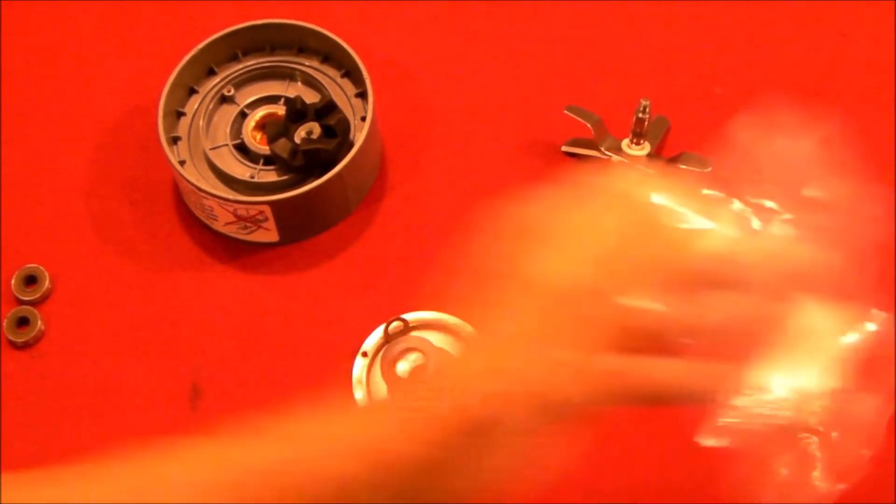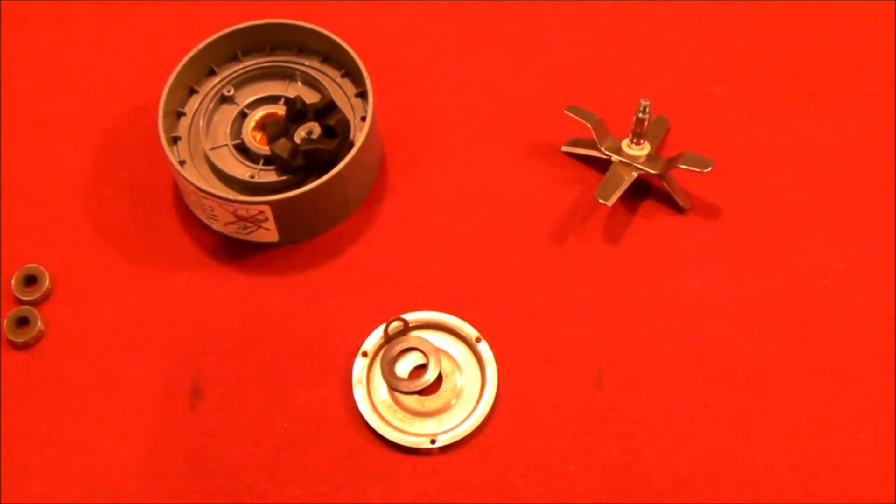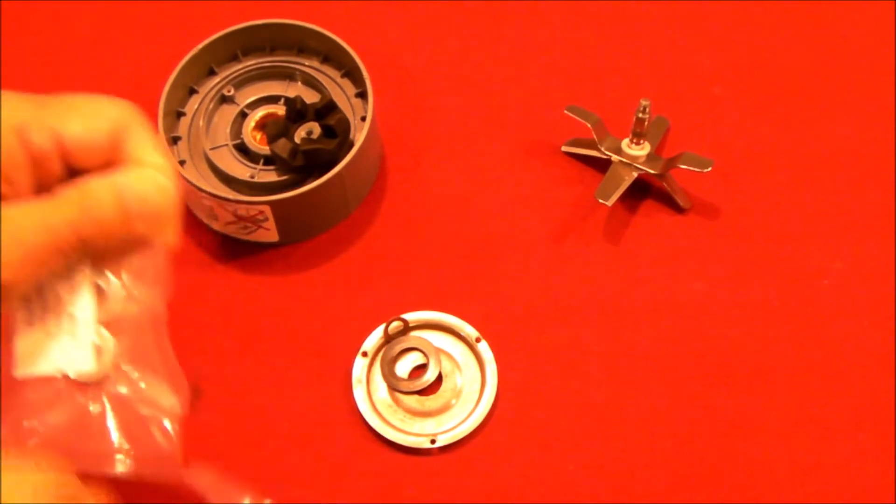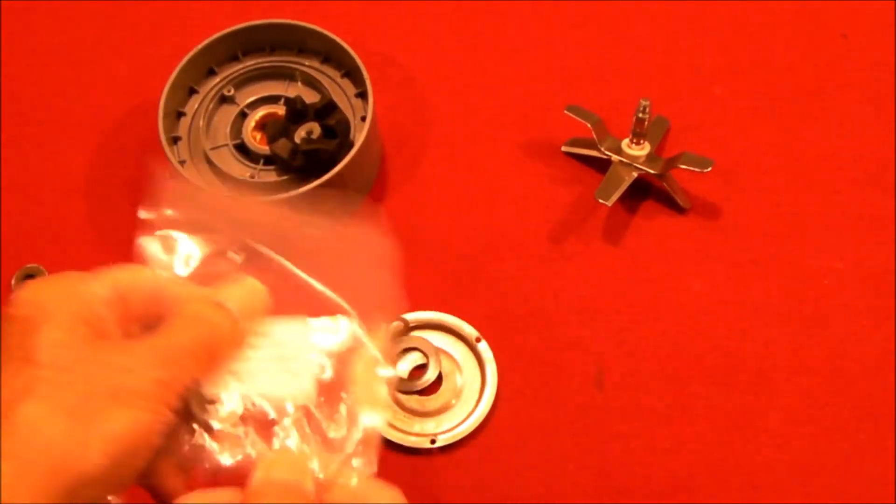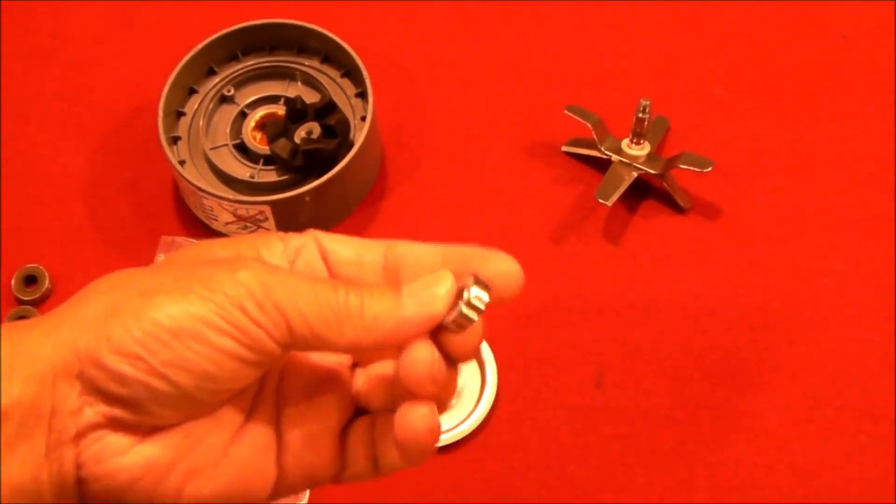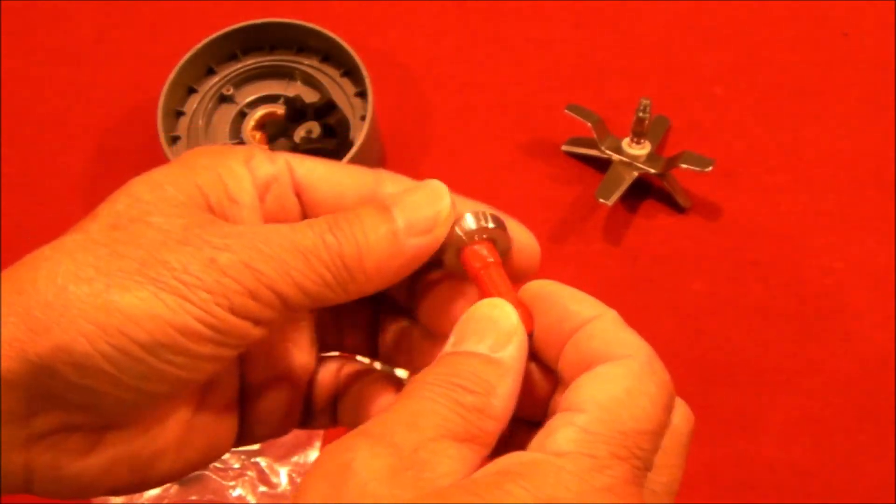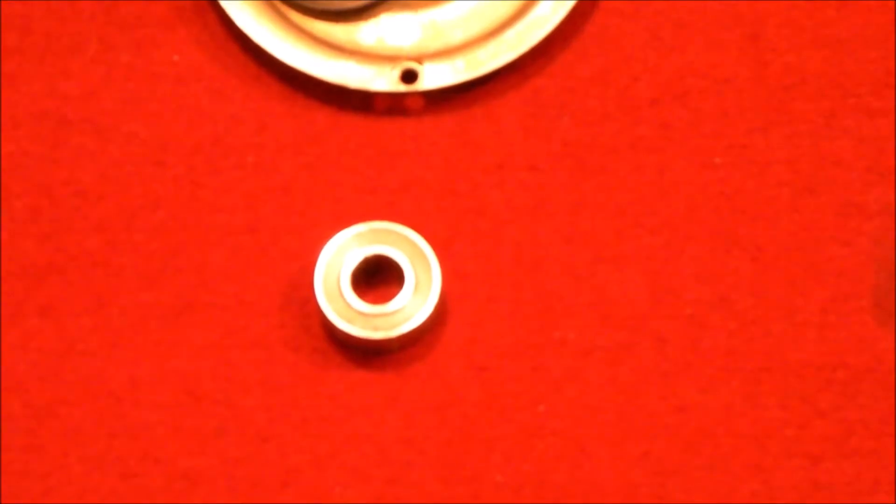So the solution that I'm going to try is to go with a set of stainless steel ball bearings. Here they are. They're the same size. The magnet will not stick to them. They are double sealed, one on each side.